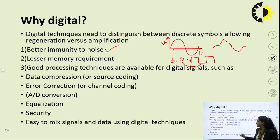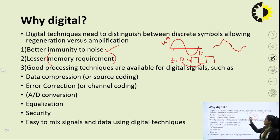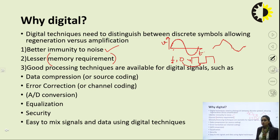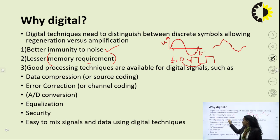Another advantage is lesser memory requirement. In analog communication, the signal is continuous in time and amplitude, so storing it would require an infinite set of values — requiring huge memory. In digital communication, one cycle can be represented as a finite set of 1s and 0s that can be stored easily. Lesser memory requirement is therefore one of the major reasons to switch from analog to digital communication.